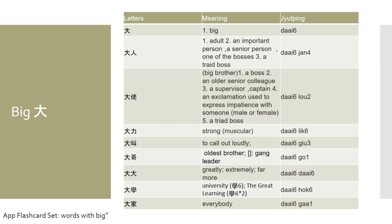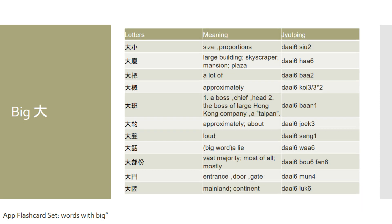If you want to say 'university' in Cantonese, you would say daai ho, daai ho. If you want to say 'everybody' or 'everyone' when addressing a group of people, you would say daai ga, daai ga, which means 'everybody.' Then you have the word daai seal, daai seal, which means 'size' or 'proportions.' But more commonly you would hear this as daai site, daai site, which means the same thing.